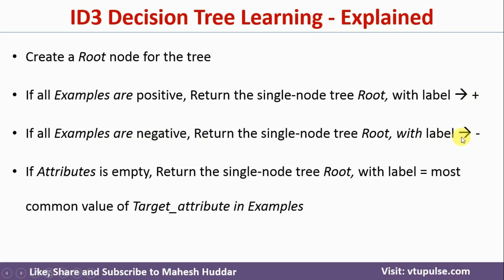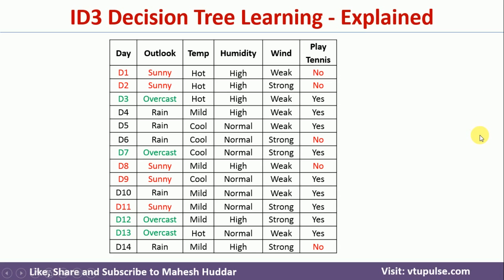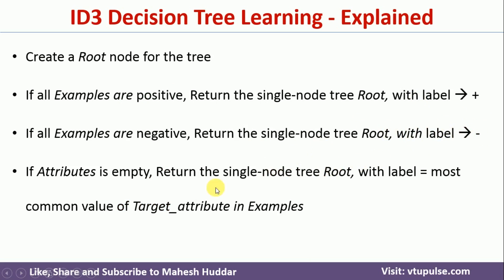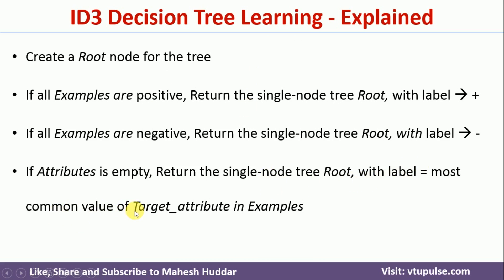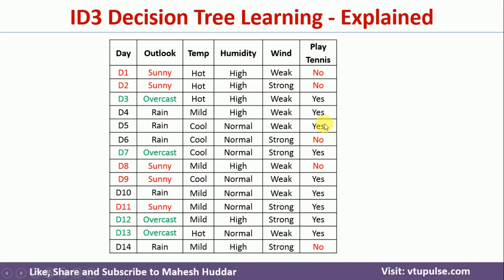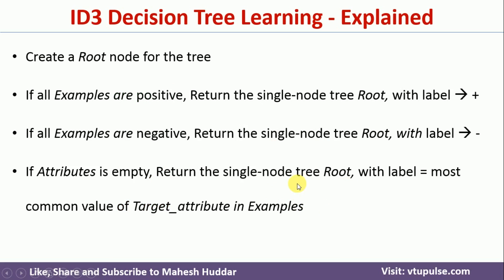If all examples are negative, 'no' will be assigned. For example, if all four examples are positive — that is 'yes' — yes will be assigned. If all are negative, no will be assigned. Those are the first two termination conditions. The third termination condition is: while building the decision tree, we may come across a situation where there are no attributes left. In such a case, it will take the most common value of the target attribute. If you look at the target column, there are five 'no' examples and nine 'yes' examples, so 'yes' will be assigned to that root node.